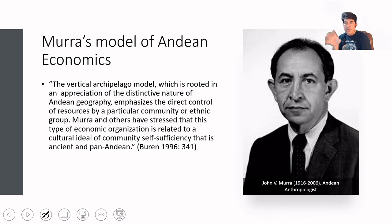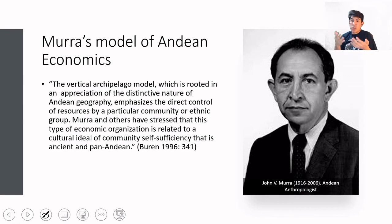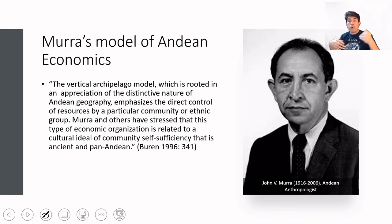What we have seen is that vertical control allows self-sufficiency of a state, and that creates a state of equilibrium where people don't need to be fighting each other because everyone has what they need. If we all reciprocate, we can get along just fine, and this allows for the growth of a civilization with more and more complexity, because the basic necessities are already covered by the system.